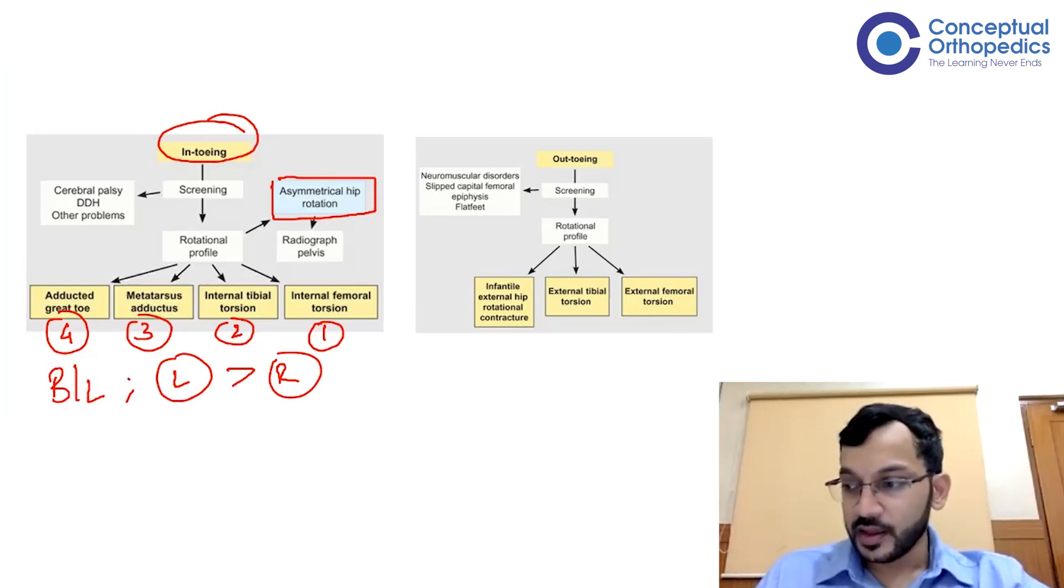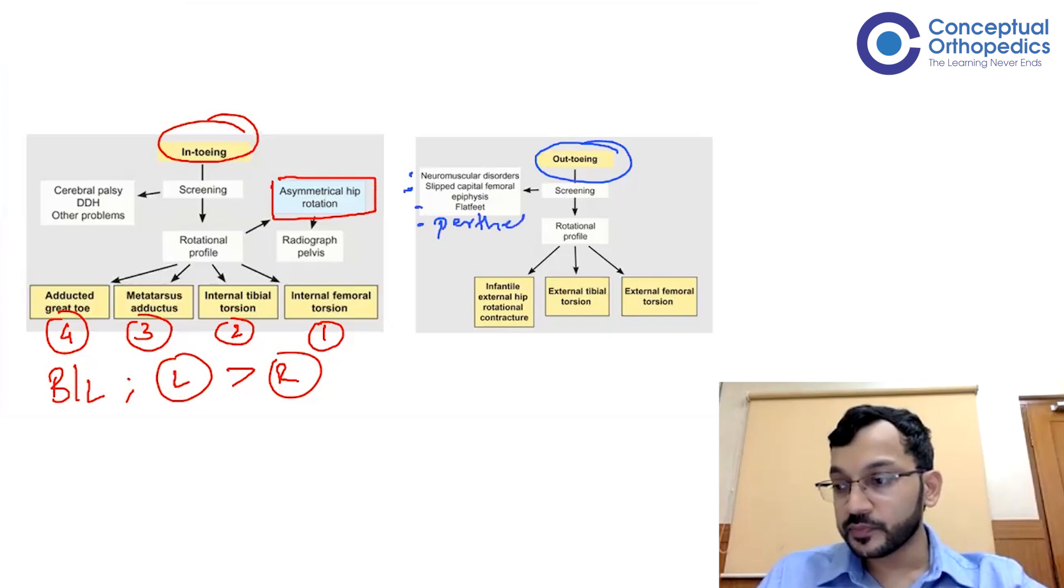Now we move on to out-toeing. In out-toeing, once you have done the history and the screening examination, we need to know a few conditions for which we need to screen out. Any condition which causes an external rotation deformity at the hip causes an out-toeing gait. It could be a neuromuscular disorder, it could be slipped capital femoral epiphysis, it could be flat feet, it could also be a sequelae of Perthes disease. All of these are the screening conditions we just need to rule out.